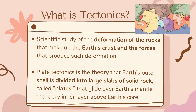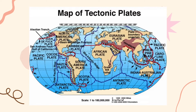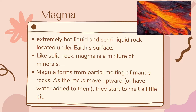What is tectonics? It is the scientific study of the deformation of the rocks that make up the earth's crust, and the forces that produce such deformation. Plate tectonics is the theory that earth's outer shell is divided into large slabs of solid rock called plates that glide over earth's mantle, the rocky inner layer above earth's core. Plate tectonics was triggered by the spreading of early continents, then eventually became a self-sustaining process, with plates sliding slowly across the earth's surface, breaking up or crushing into each other to create new, more significant land masses.